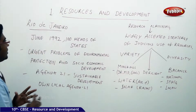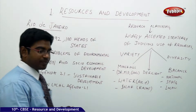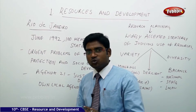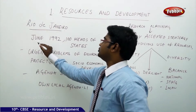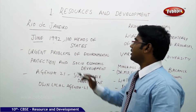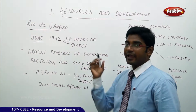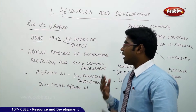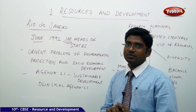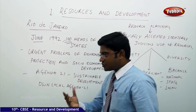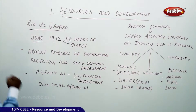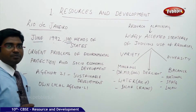Understanding what happened in the Rio de Janeiro scenario. The Rio de Janeiro summit was the first international conference held in June 1992. In this conference, nearly 100 country heads of state came together and joined for group action because of the urgent problems of environment protection and socio-economic development.